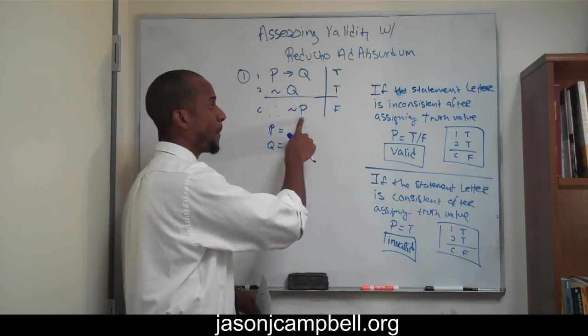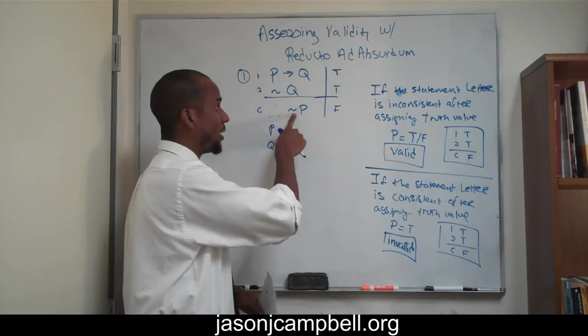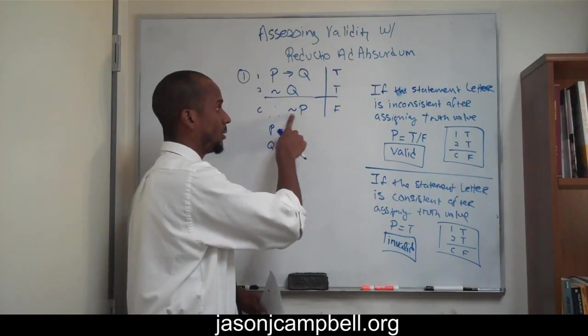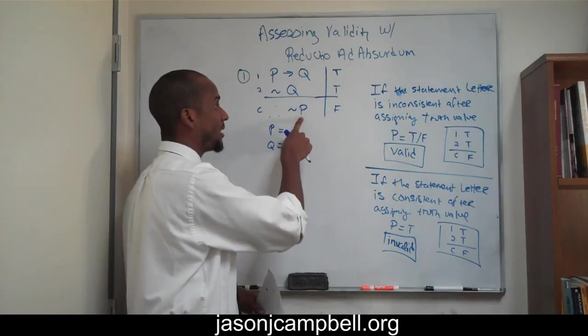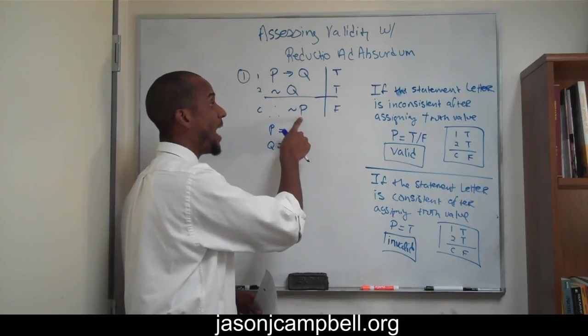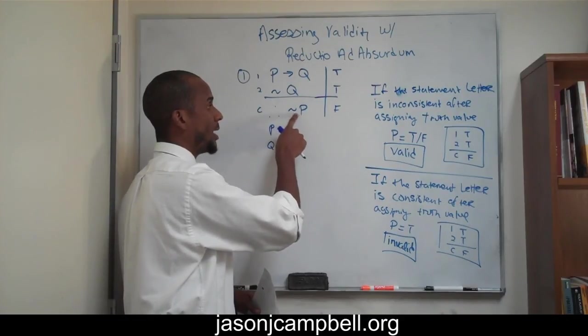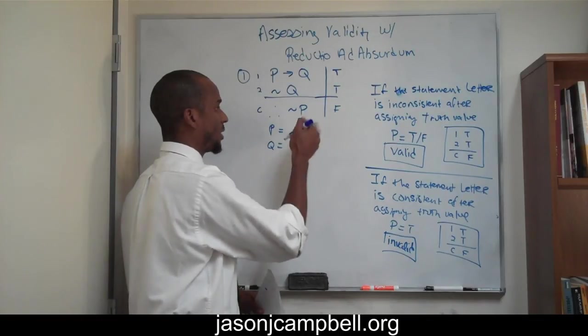So we recognize that P, in order for this to be false, has to be true. Because not true is false. If I were to assign this as false, then not false would be true, so it can't be that. We know then that P has to be true. Not true, substitute truth of P means that this is false.